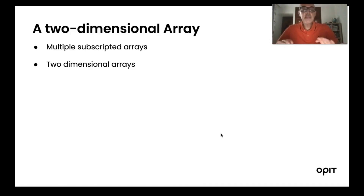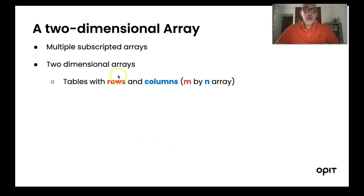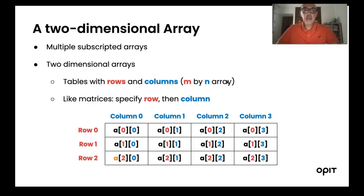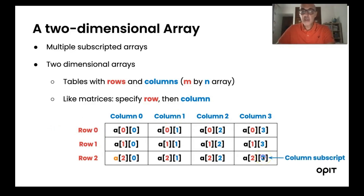A 2D array can be seen as a table having rows and columns. If I have m rows and n columns, I call it an m by n array. Like in mathematics, you can consider this table as a matrix. We specify not only the subscript but the row and the column. Here I have a matrix or two-dimensional array having three rows and four columns. As with a simple array, we start from zero always, specifying the row and the column subscripts, followed by the array name.